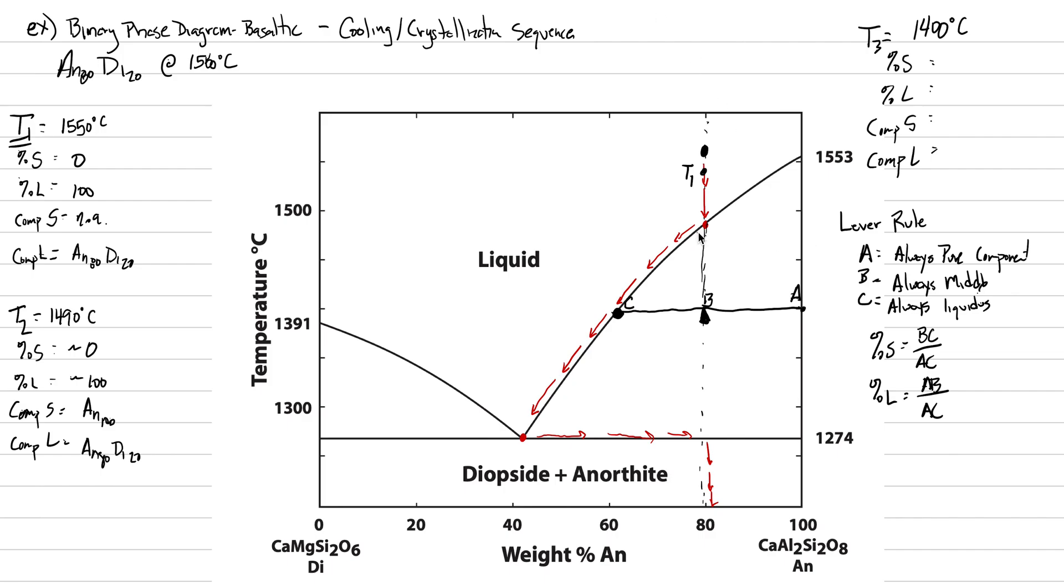If you ever get stumped on this, do a little intuition check. Go up to the hottest temperature. We're super hot, we've only crystallized a little bit. Which length is the percent liquid or percent solid? Well, we're super hot, so if we're super hot, there should be very little crystals. Therefore, the BC should be the percent crystals, and it is according to the lever rule.